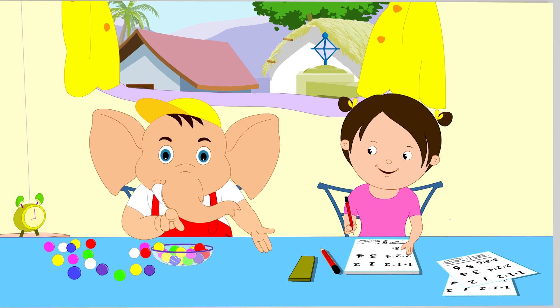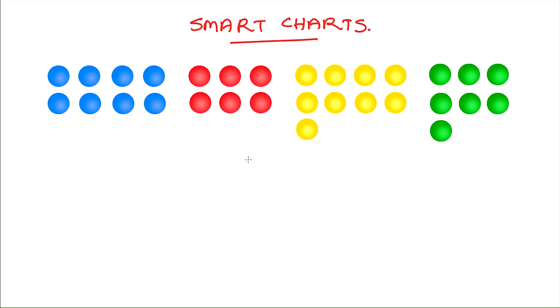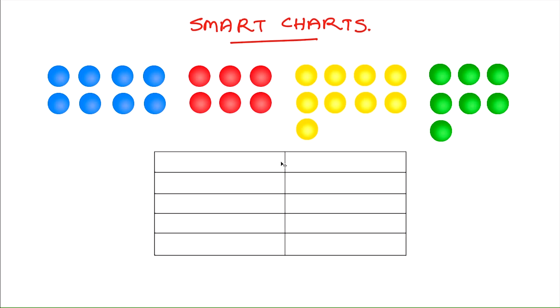When you make a table you make one column that shows the category and another that shows the number of things in that category. So here I have a column for the color of the beads and here is a column for the number of beads.